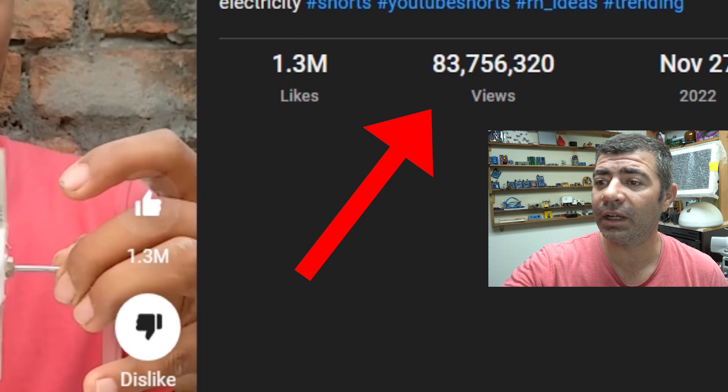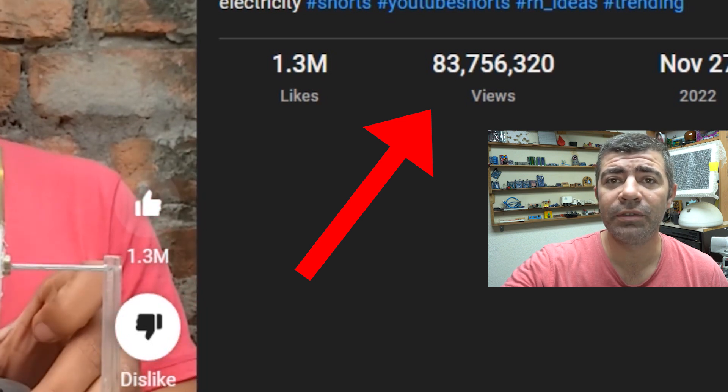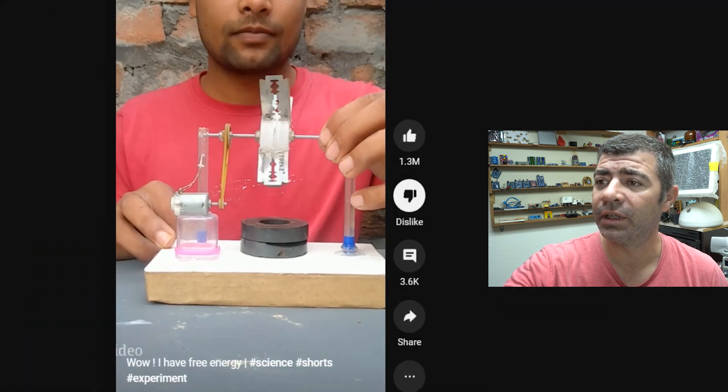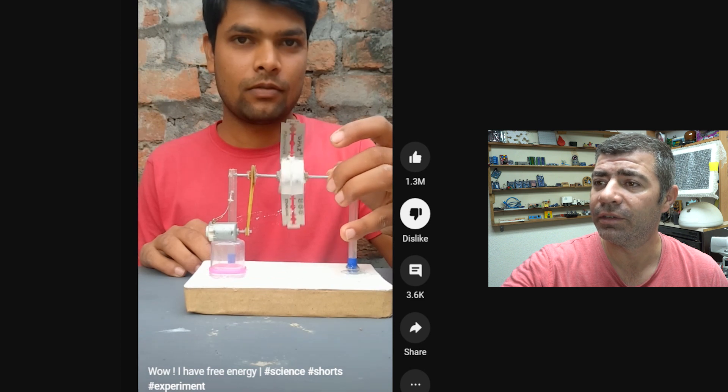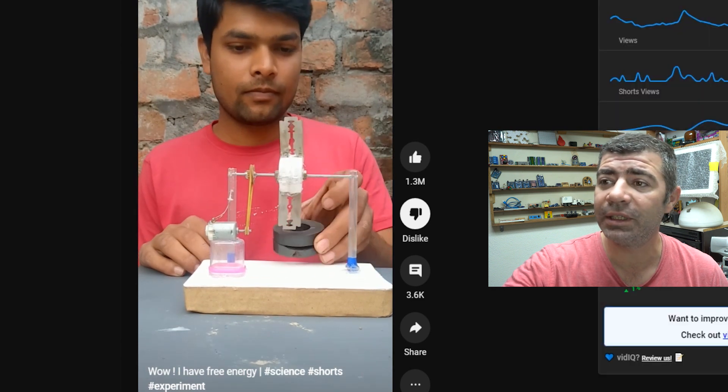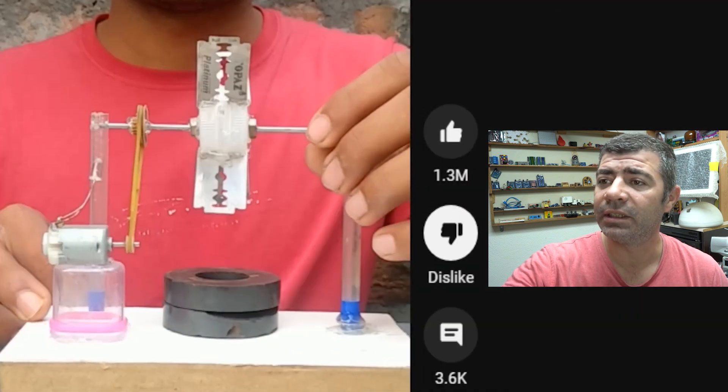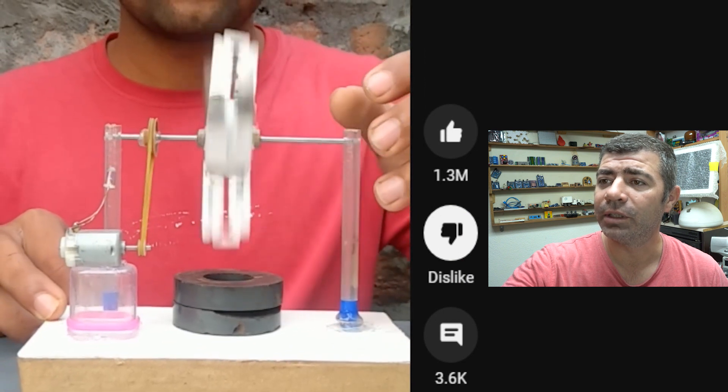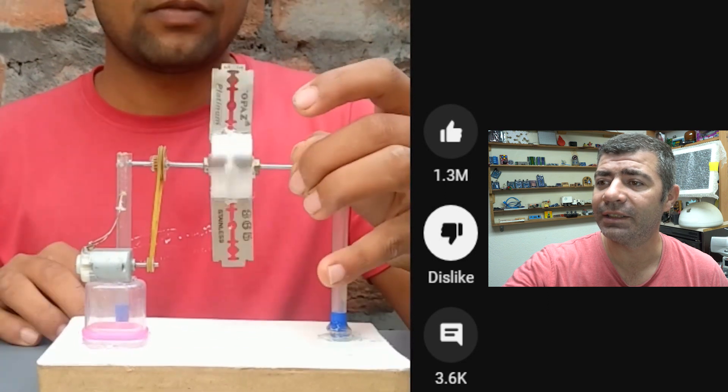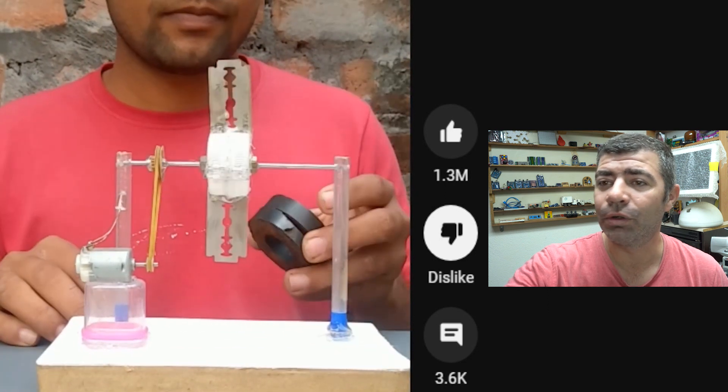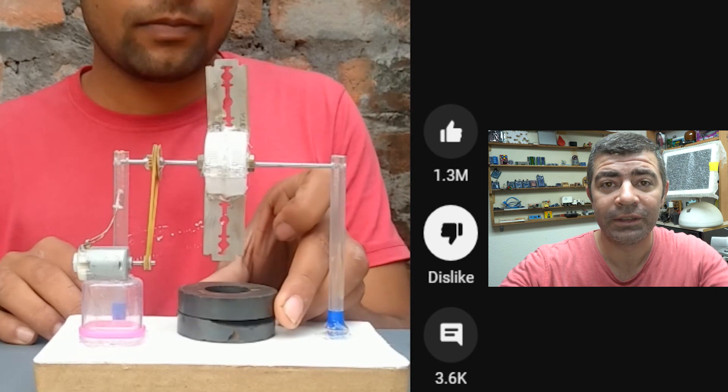And this video got 83 million views on YouTube shorts and 1.3 million likes. I can't believe it. He made a free energy device out of razor blades, and when you place the magnet below, the motor is spinning. I guess the batteries are hiding somewhere below. What do you think? Comment below.